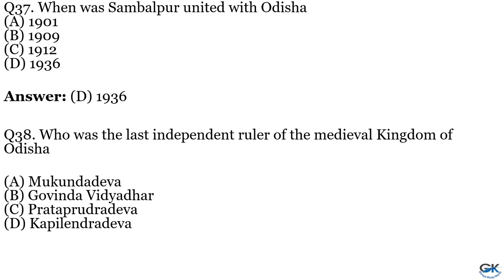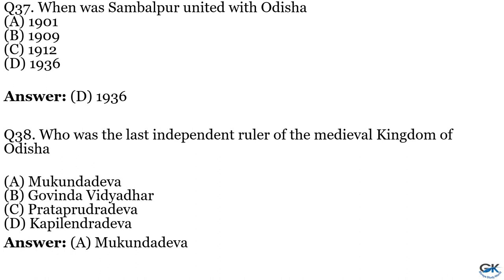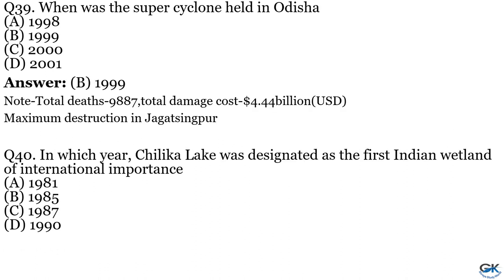Question No. 38: Who was the last independent ruler of the medieval kingdom of Odisha? Option A: Mukundadeva. Option B: Govindavidyadhara. Option C: Prataparudradeva. Option D: Kapilendradeva. The answer is Option A, Mukundadeva. Question No. 39: When was the super cyclone in Odisha? The answer is Option B, 1999. Total deaths: 9,887. Total damage cost: $4.44 billion. Maximum destruction in Jagatsinghpur district.